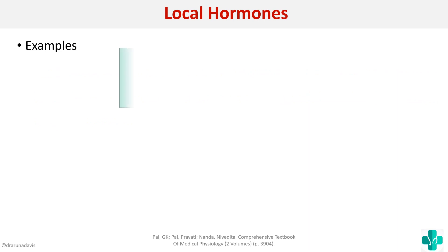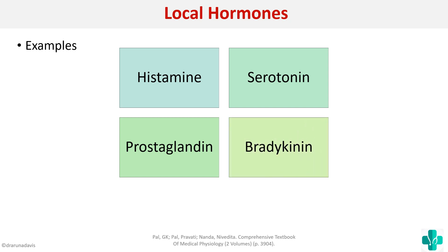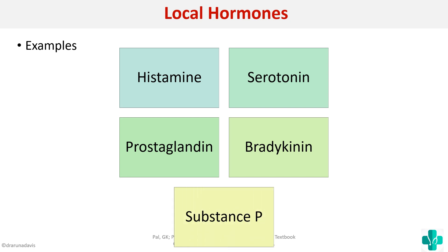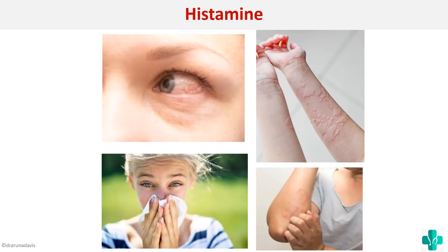Important examples of local hormones are histamine, serotonin, prostaglandin, bradykinin, and substance P. We'll see each one by one. First, we'll see about histamine.